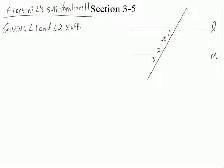I'm trying to prove that 1 and 2 are supplementary by not using the theorem that says if the consecutive interior angles are supplementary, then the lines are parallel. And so what are you trying to prove? You're trying to prove that the lines are parallel. So L is parallel to M.